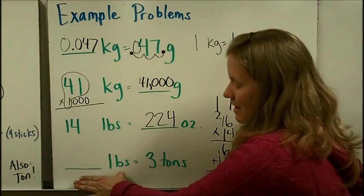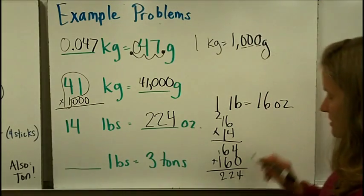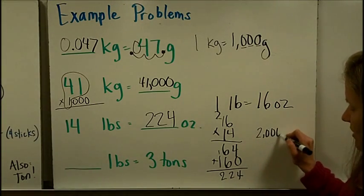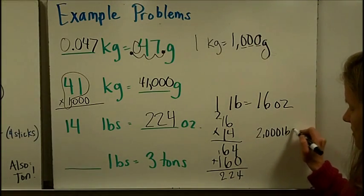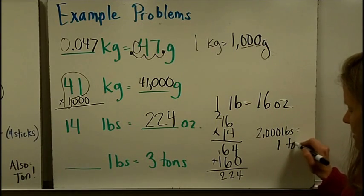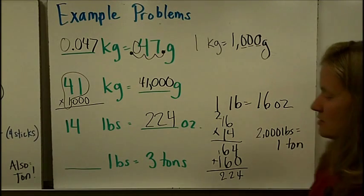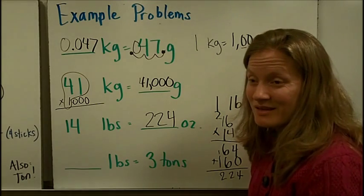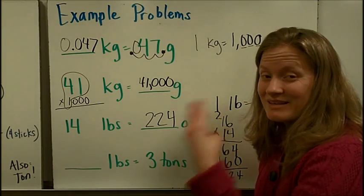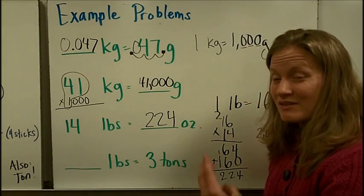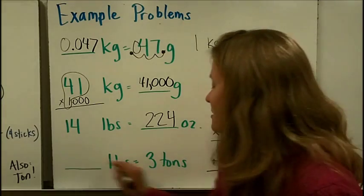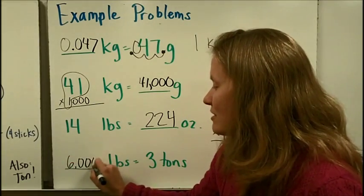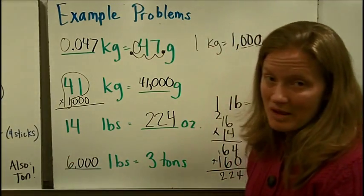Finally, how many pounds are in 3 tons? Remember that 2,000 pounds equals 1 ton. Counting by 2,000: first ton is 2,000, second is 4,000, third is 6,000. So 3 tons equals 6,000 pounds.